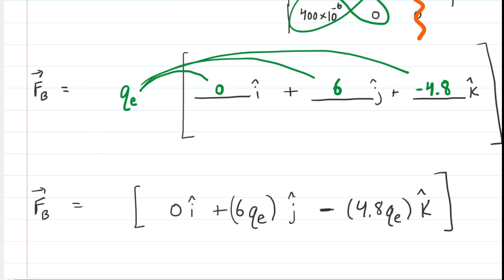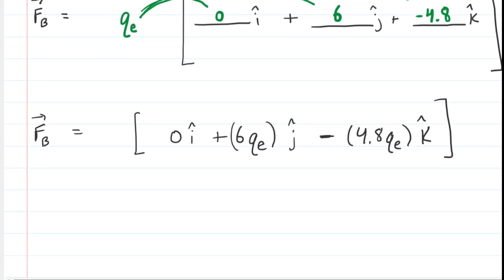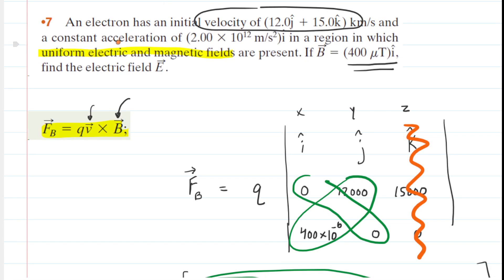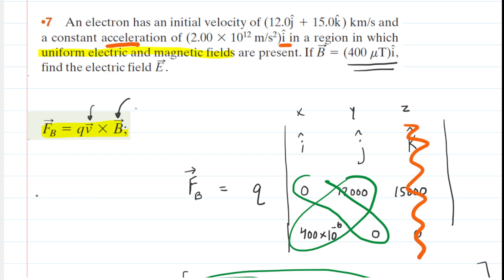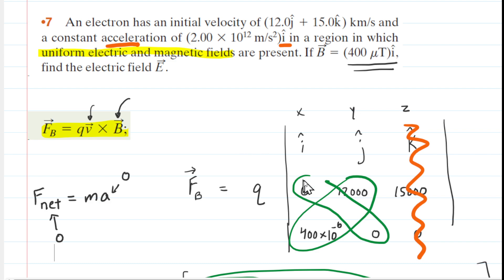Recall that this electron was accelerating in the i-hat, which is the x direction. It is not accelerating in the y or z directions. If it's not accelerating in the y or z directions, then the net force in those directions must be zero — from Newton's second law, which states net force equals mass times acceleration: zero acceleration means zero net force in that direction.